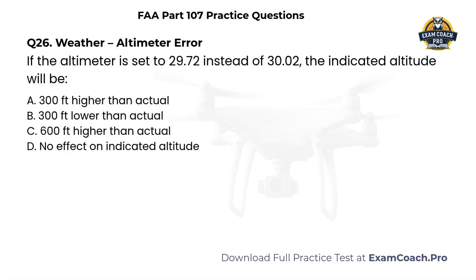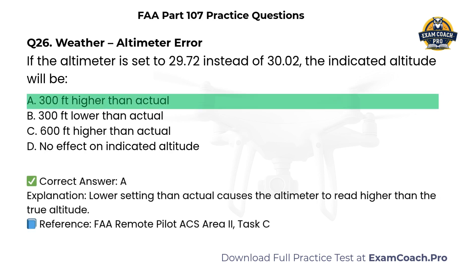Weather. Altimeter error. If the altimeter is set to 29.72 instead of 30.02, the indicated altitude will be: A. 300 feet higher than actual. B. 300 feet lower than actual. C. 600 feet higher than actual. D. No effect on indicated altitude. Correct answer: A. A lower setting than actual causes the altimeter to read higher than the true altitude.